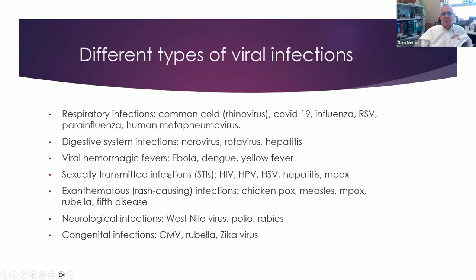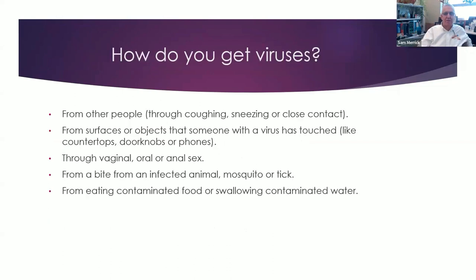More recently mpox, originally known as monkeypox, which has been endemic in Africa but for the first time we had a big outbreak — that's a so-called orthopox virus, very similar to smallpox. There are rash-causing viruses like chickenpox and measles, fifth disease in kids, neurologic infections like West Nile virus which has been endemic to New York, polio, rabies, and then some congenital infections like Zika, which cropped up a few years back.